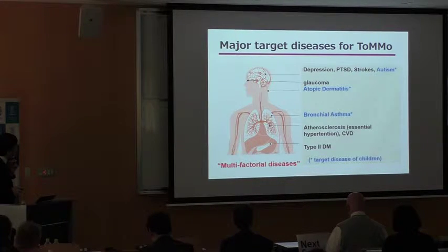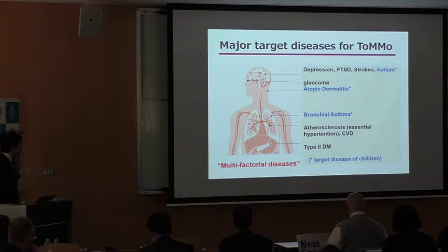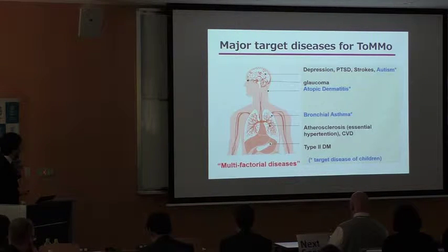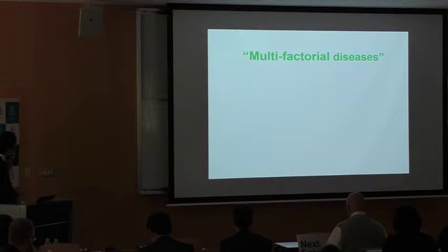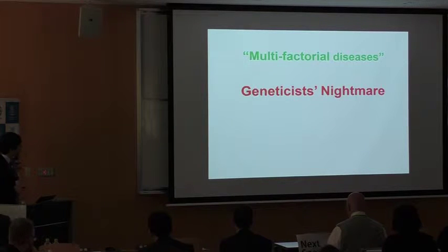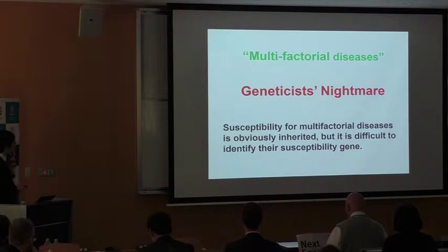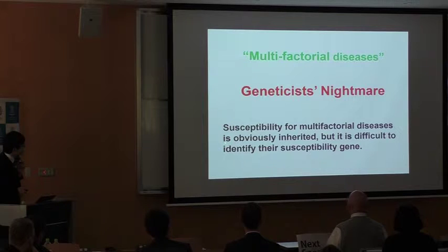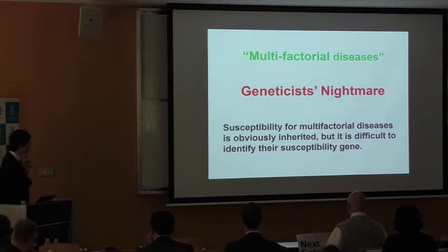Autism, atopic dermatitis, and bronchial asthma are diseases of children. I am really interested in autism. Multifactorial disease is very difficult — it's called the 'genetic nightmare.' The reason why is that the susceptibility for multifactorial disease is always inherited, but it is very difficult to identify the susceptibility gene.